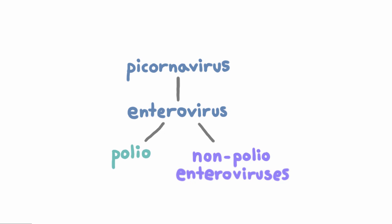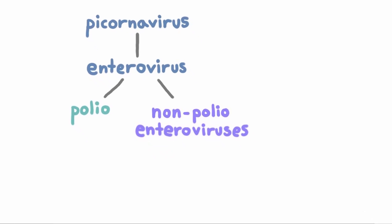Let's start with the name game. They include echoviruses, coxsackieviruses, and enteroviruses. The naming here is a little annoying — enterovirus is the genus, and there are species in that genus called enterovirus. There are also many, many subtypes of each of these. You don't need to know all the subtypes, but you do need to know that coxsackieviruses are usually divided into two groups: coxsackieviruses A and coxsackieviruses B, because when you test for coxsackieviruses, you usually test for A and B separately.